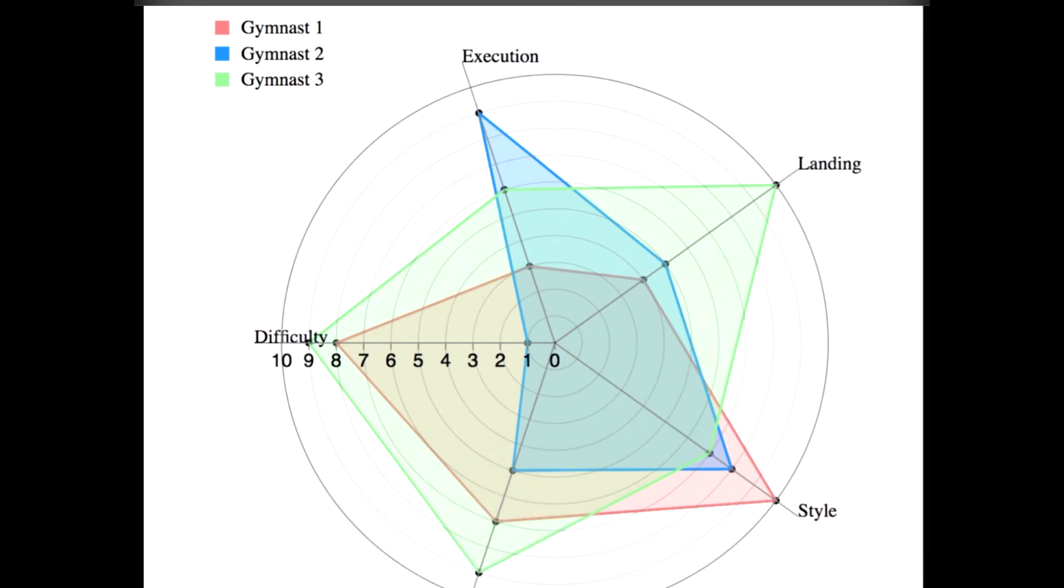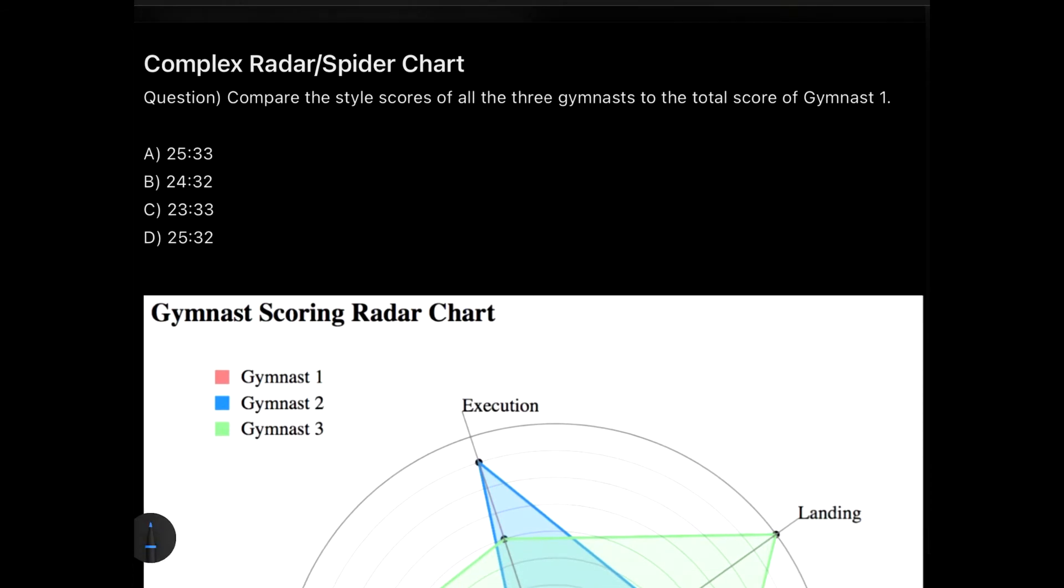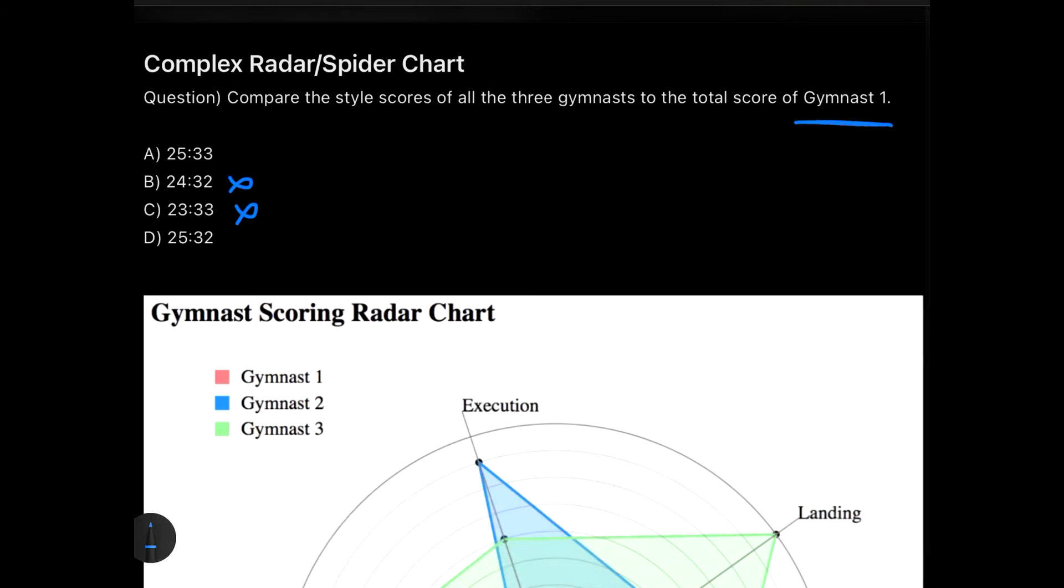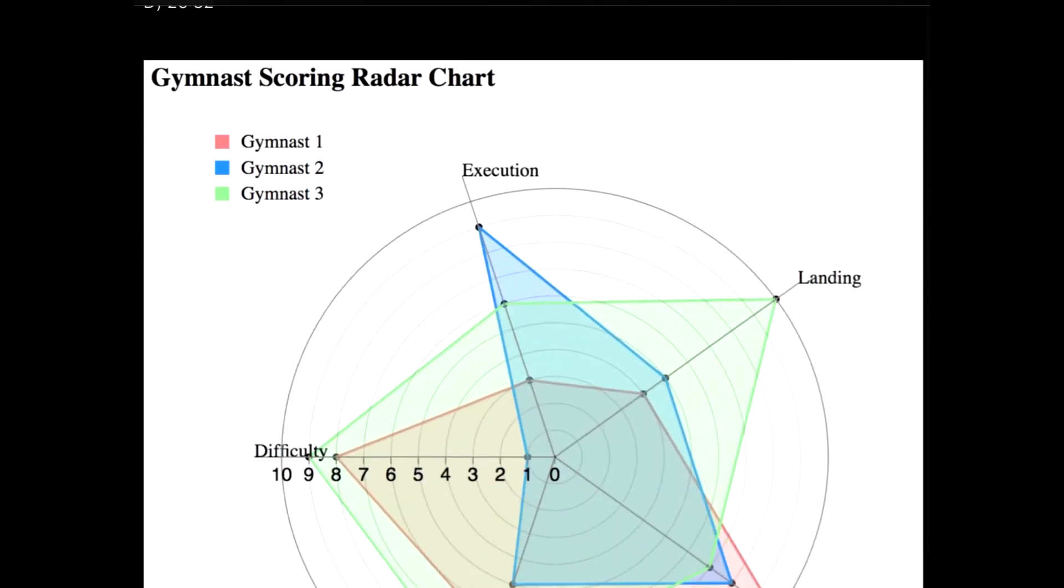Now let's go back and check our options. Which options can we eliminate based on this data? We can eliminate option B and option C because they don't have 25 in their first part. The only part left is to find out the total score of gymnast one. Once we do that and get to know whether it is 33 or 32, we will get the answer to this question.